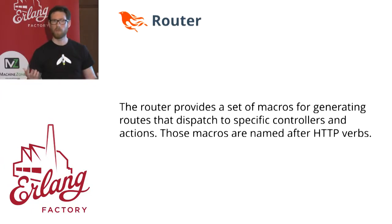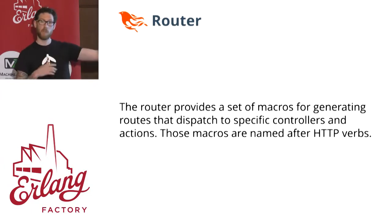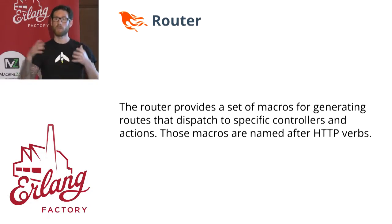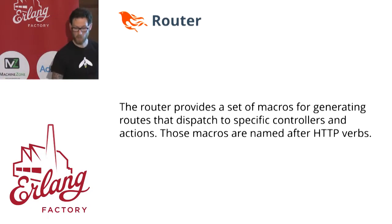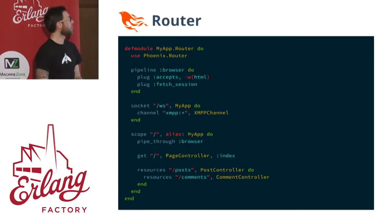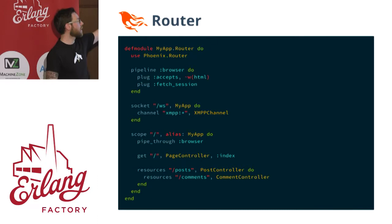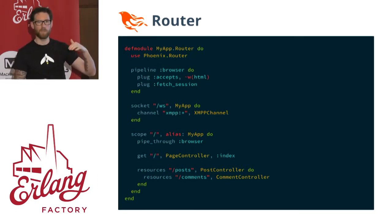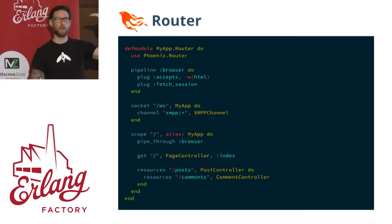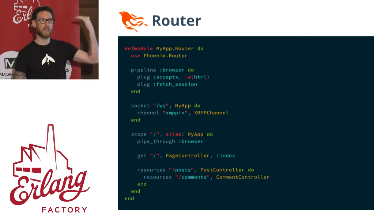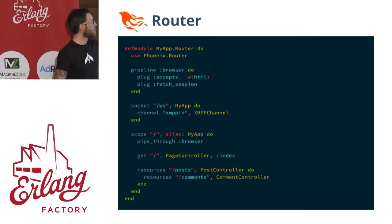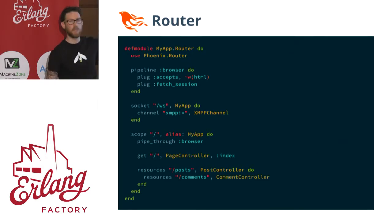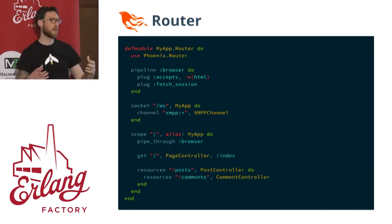The router provides routing from HTTP verbs and your resources to modules that will handle the actual business logic. Your typical router has an awesome feature called pipelines, which allow you to build up interactions of your connection that's coming in. We have pipeline browser, which will say we're going to accept HTML, which works with the accept headers — if it's not set, it will automatically work with HTML by default.